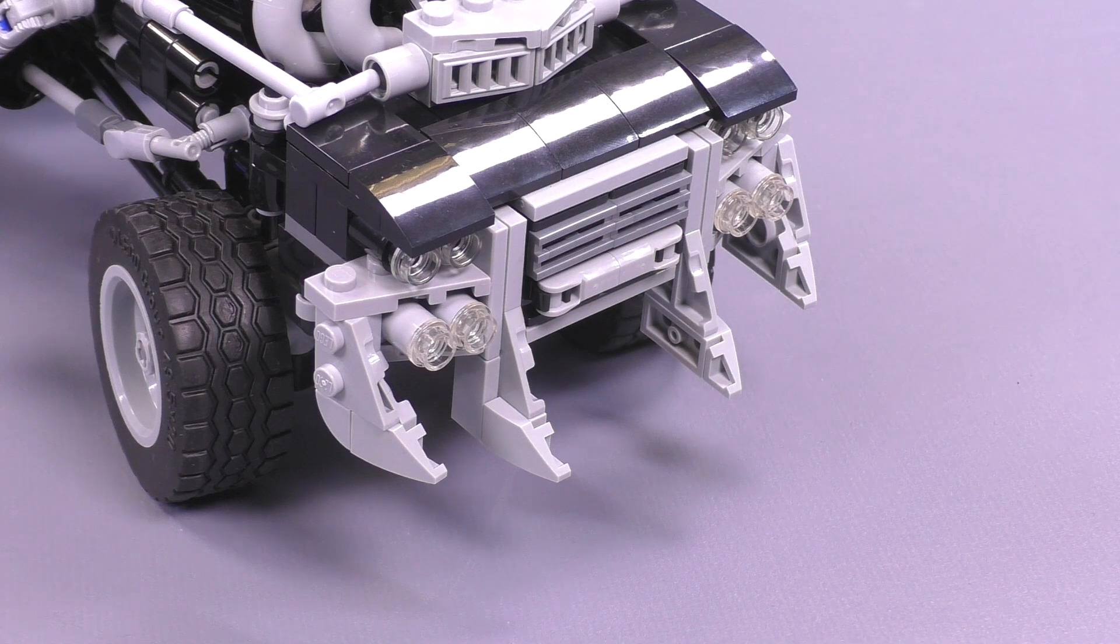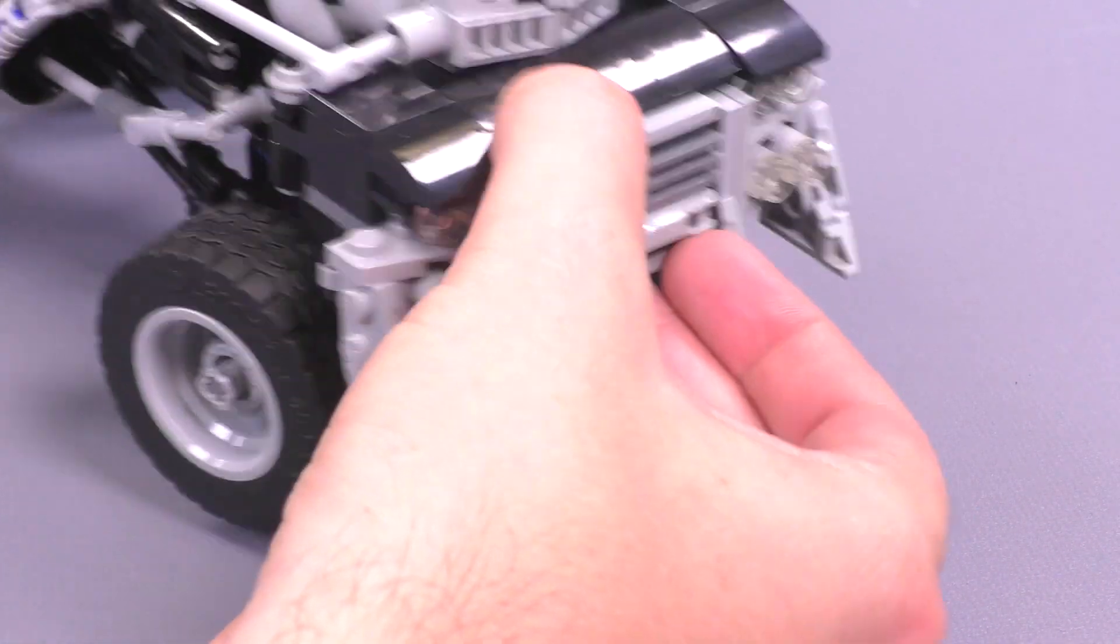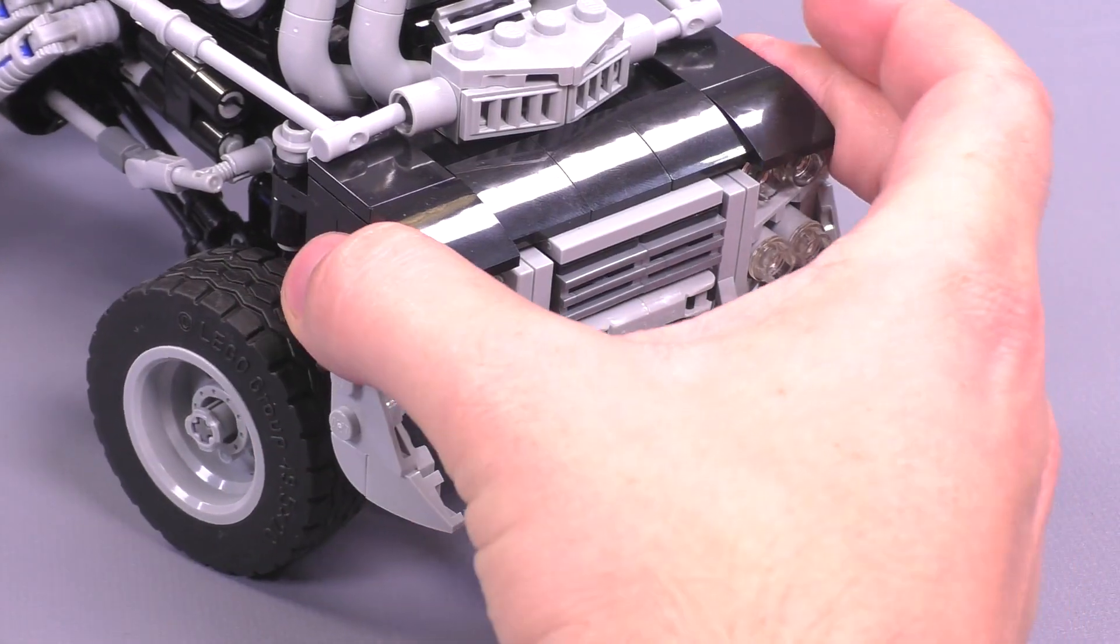Also, you can't really tell by the looks of it, but the connection here is a lot stronger. The front grill was a little bit weak and you kind of had to be slightly delicate with the way it was attached. That's not the case anymore.